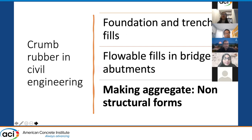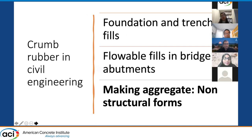In civil engineering, there are several uses of crumb rubber. For example, crumb rubber can be used as foundation and trench fills. It can be used as flowable fills in bridge abutments, and crumb rubber can be used for making aggregates too, mostly in non-structural forms.